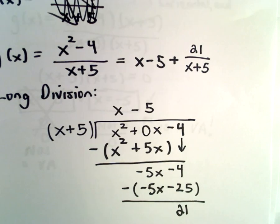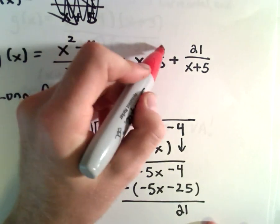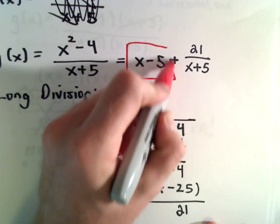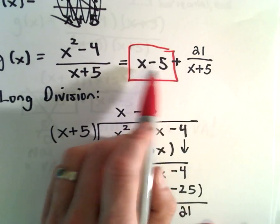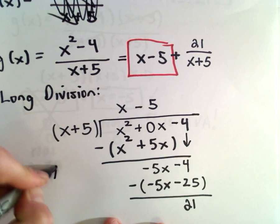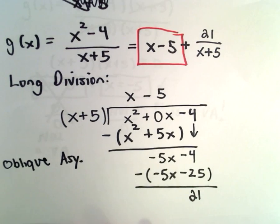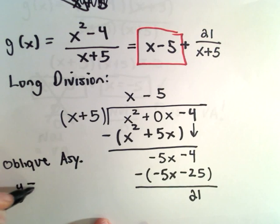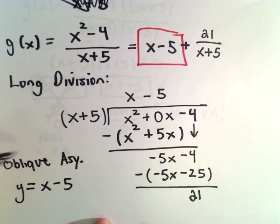To get the oblique asymptote or the slant asymptote, we just leave the remainder off. So in this case, the oblique asymptote will be the line y equals x minus 5.